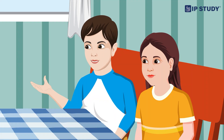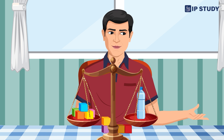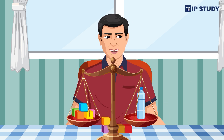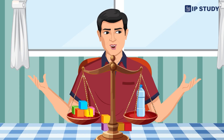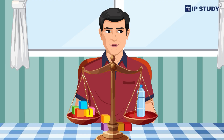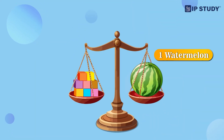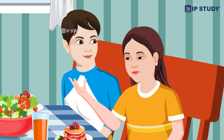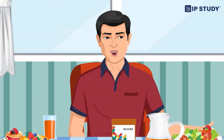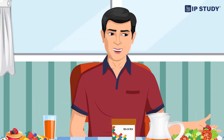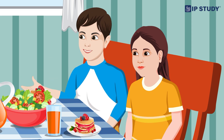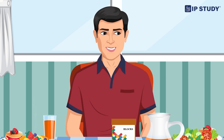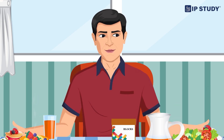It took five blocks. Good observation Aman! The water bottle weighs as much as five blocks. Can we weigh the watermelon? Of course, let's use the logs this time. It took eight blocks. That's correct — the watermelon is heavier than the water bottle. So more blocks or logs means something is heavier. Exactly! You're both learning quickly about measuring weight.